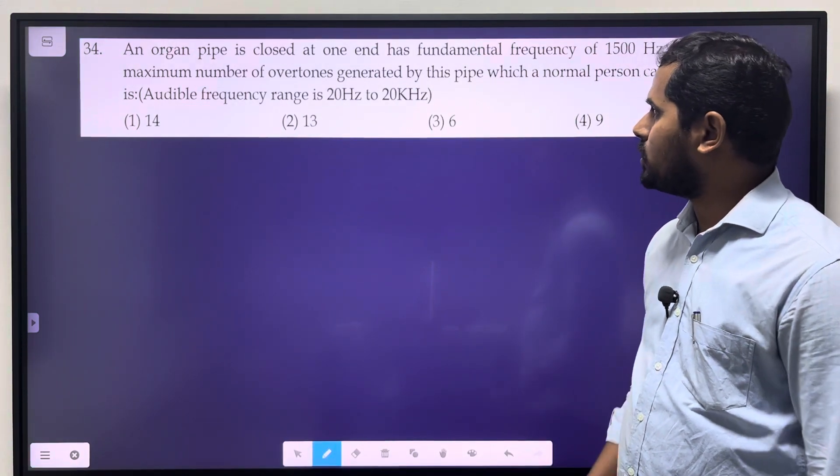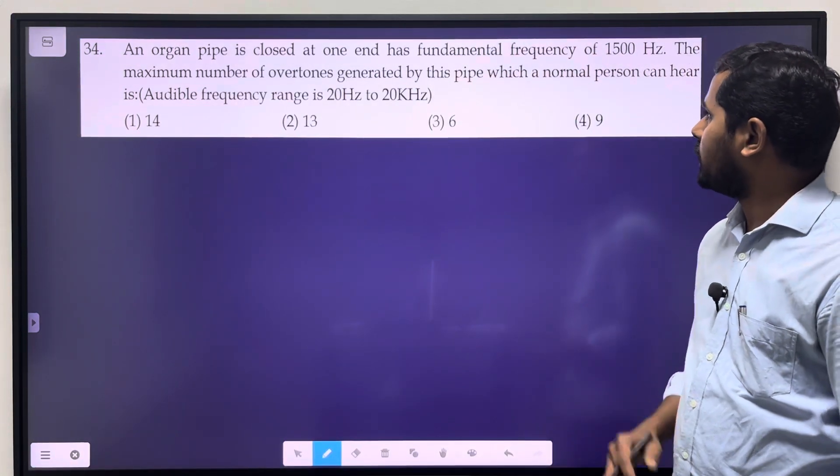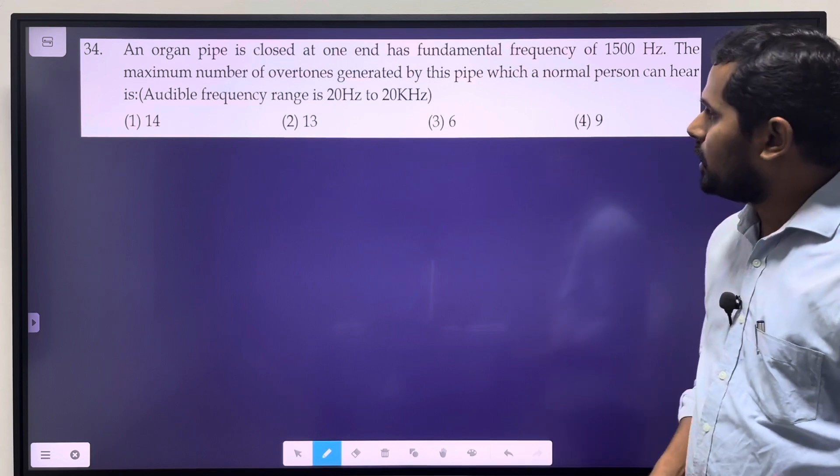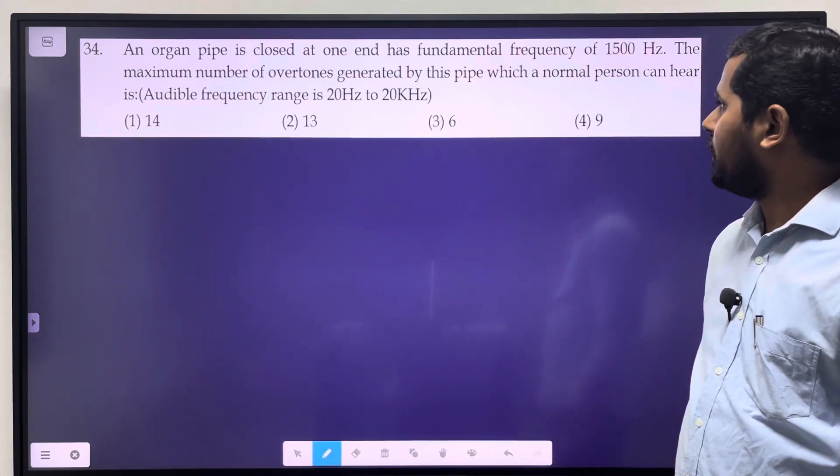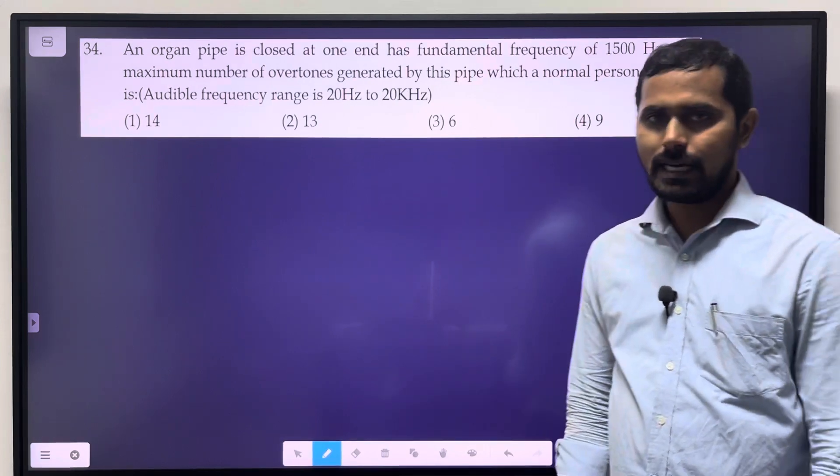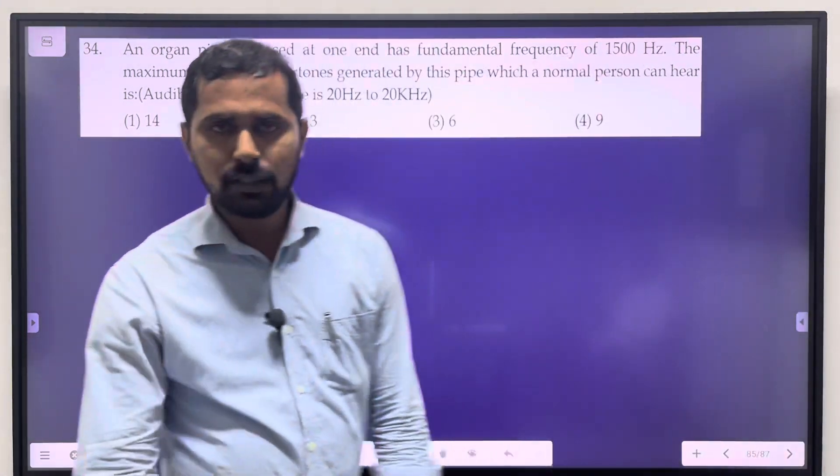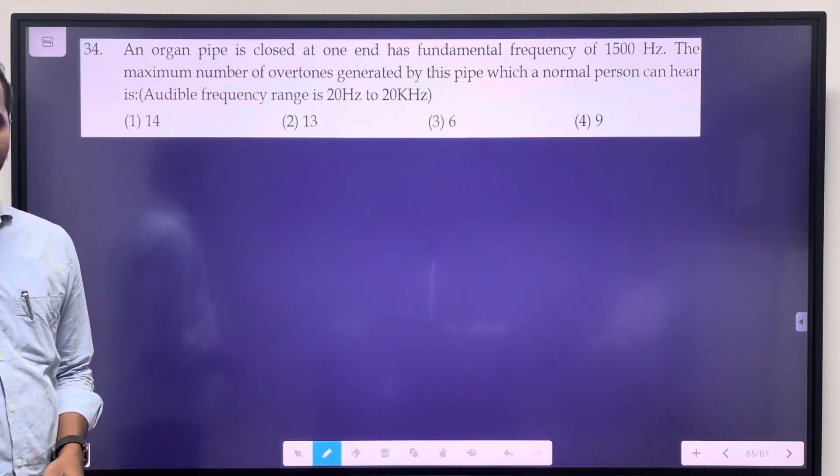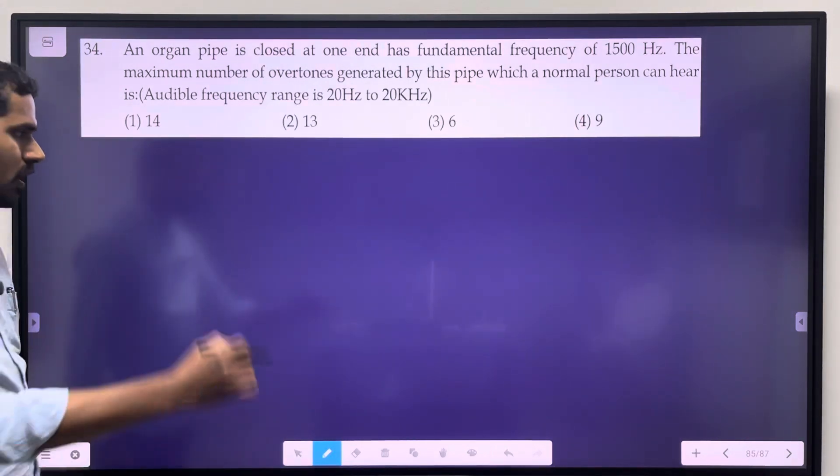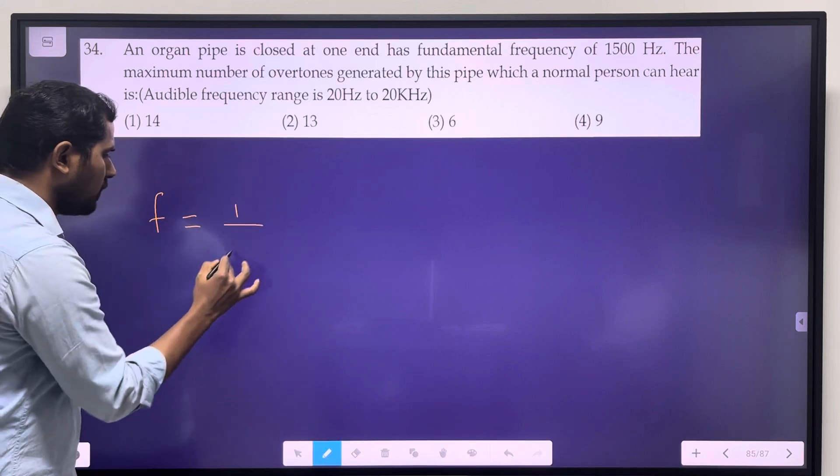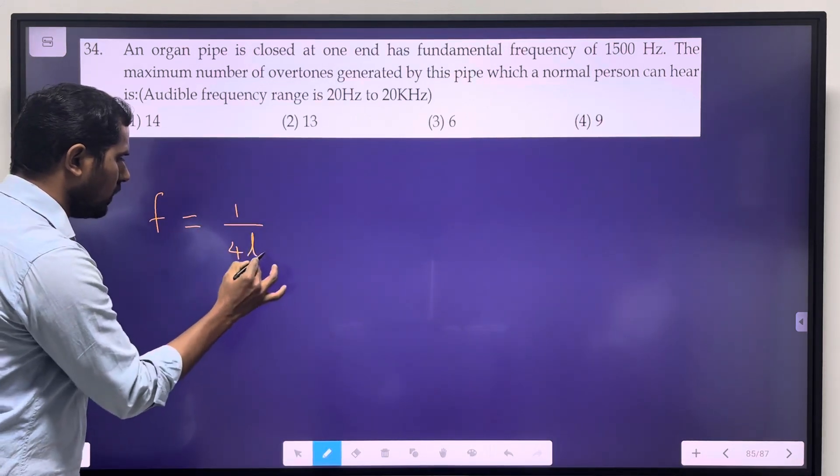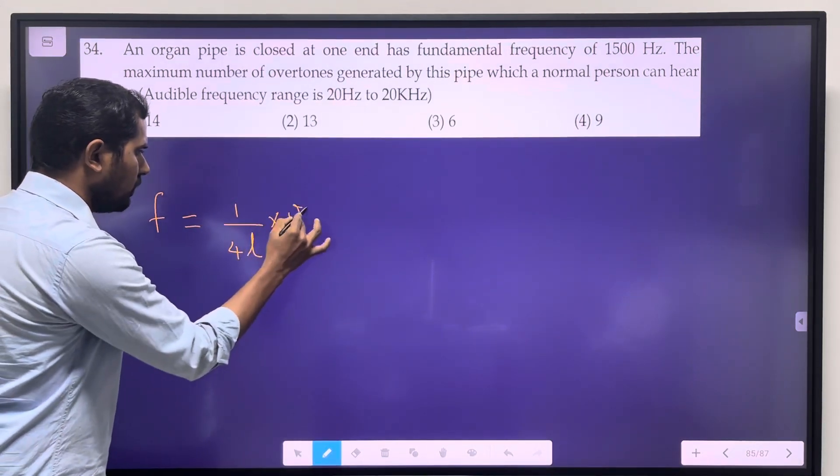An organ pipe is closed at one end, has a fundamental frequency of 1500 Hz. The maximum number of overtones generated by this pipe which a normal person can hear is... If we have a closed organ pipe, the frequency formula is f equals v by 4L.